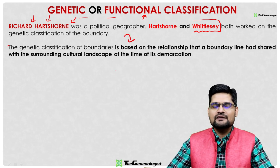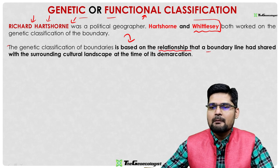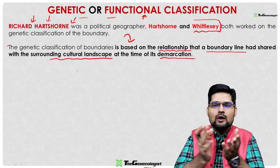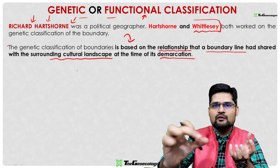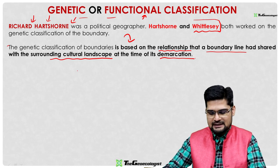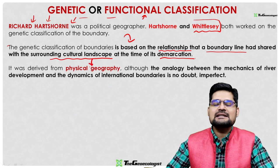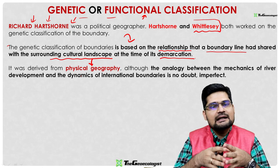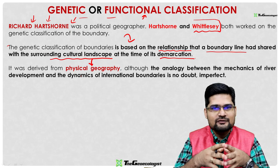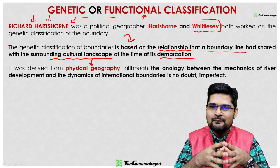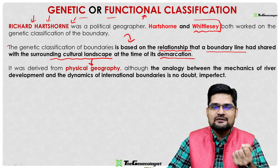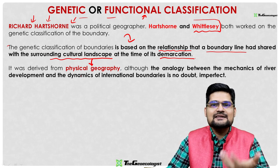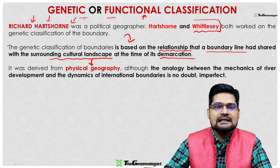The genetic classification is based on the relationship that a boundary line shared with the surrounding cultural landscape at the time of its demarcation — what is the relationship between the two sides where the boundary is being created. This idea derives from basic physical geography of the area, drawing an analogy from the Davis cycle of landform development. Streams such as antecedent, superimposed, and consequent inspired this genetic classification of boundaries.